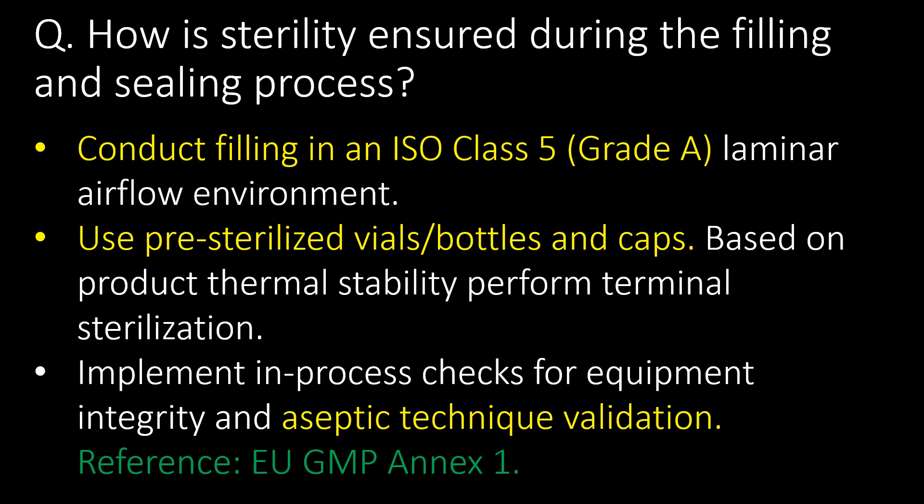How is sterility ensured during the filling and sealing process? Conduct filling in an ISO Class 5 (Grade A) laminar airflow environment. Use pre-sterilized vials or bottles and caps based on product thermal stability. Perform terminal sterilization. Implement in-process checks for equipment integrity and aseptic technique validation. Reference guideline: EU GMP Annex 1.